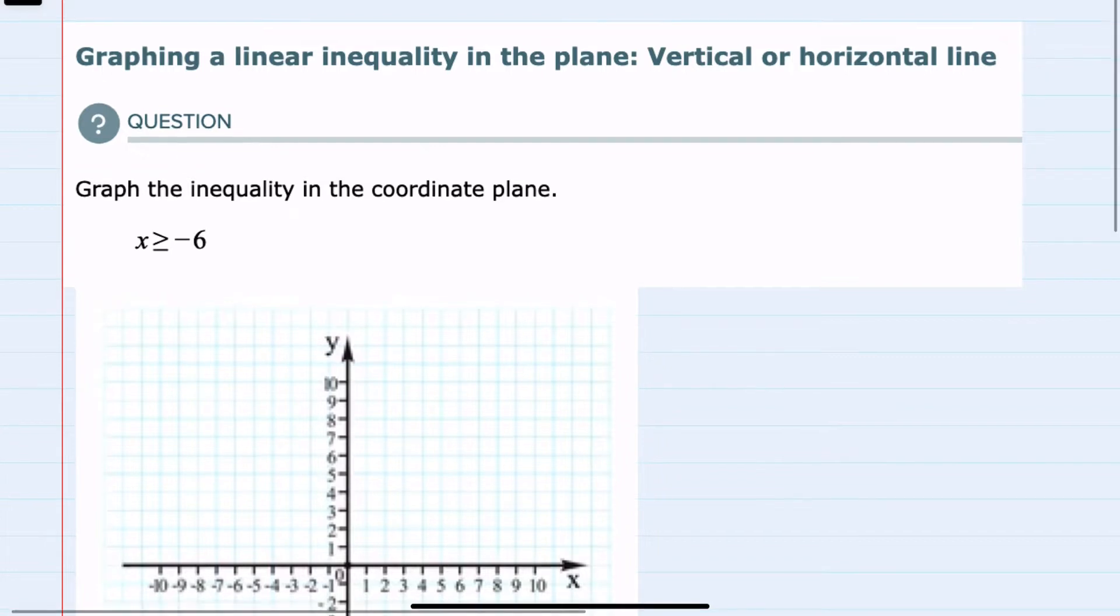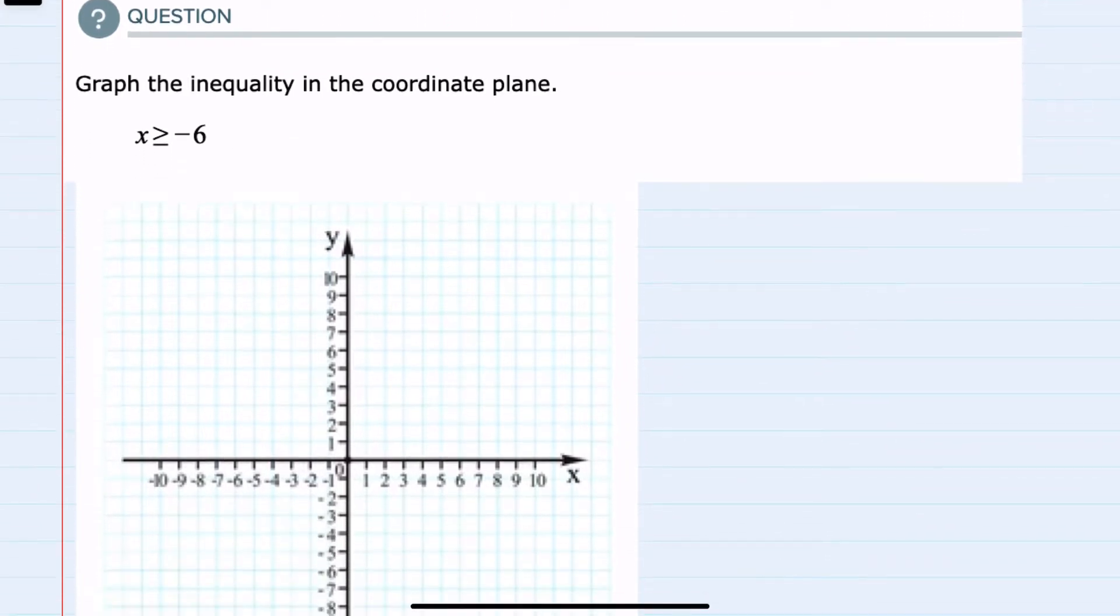We're asked to graph the inequality in the coordinate plane, and our inequality is x is greater than or equal to negative 6.